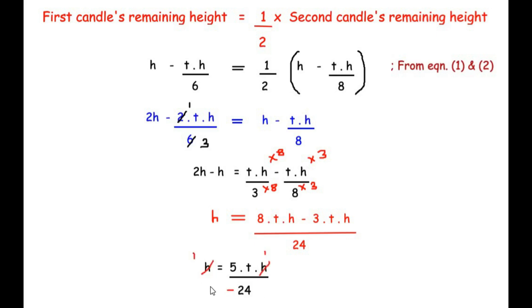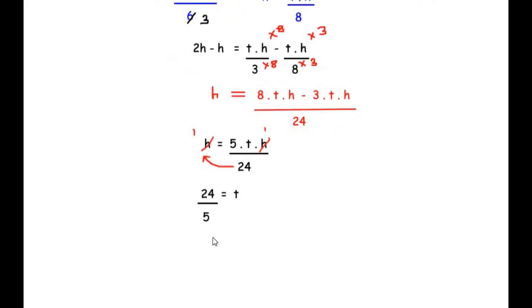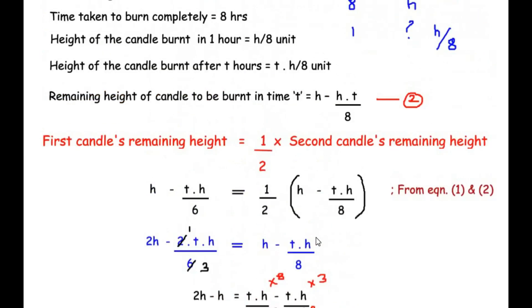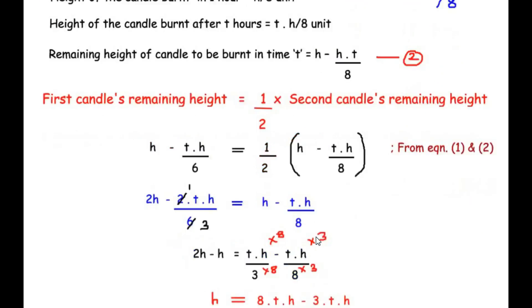Taking 24 to the other side and 5 to the denominator, we get t equals 24 over 5, which in decimal is t equals 4.8 hours. This is the time after which the first candle's remaining height will be half of the second candle's remaining height. I hope you understood all the steps. If you know any other way of solving this, do comment below. If you're liking my videos, like, share, and subscribe — thank you for watching!